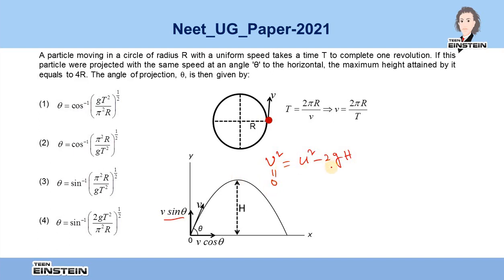By using this kinematic equation, we can find that the maximum height H is (v sin theta)² divided by 2g.